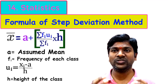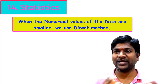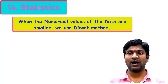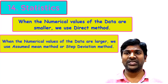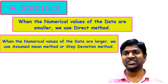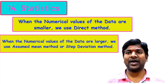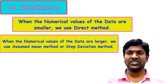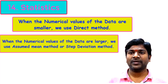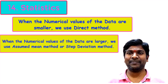We have already discussed the direct method and the assumed mean method. Now we are discussing the step deviation method. When numerical values of the data are smaller, we use the direct method. When values are larger, we use the assumed mean method or step deviation method. Among these two, step deviation is more convenient as it handles larger values more easily.